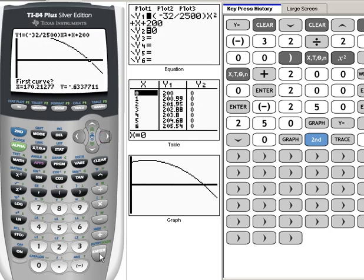And once we're there, we hit enter three times for first curve, second curve, and then for guess. And it'll tell us now that those two things are meeting at an x value of 170.02. So that would be how far out from the base of the cliff we would be when the projectile hits the water.